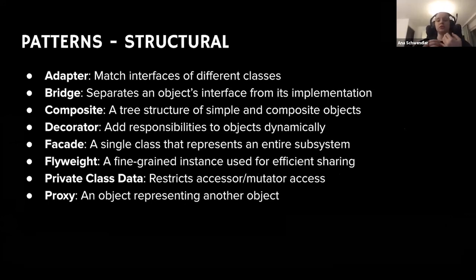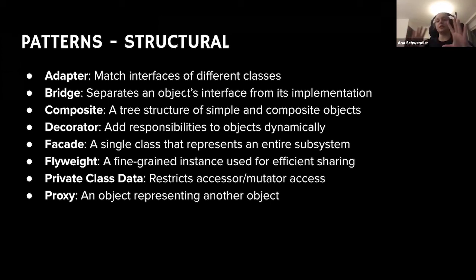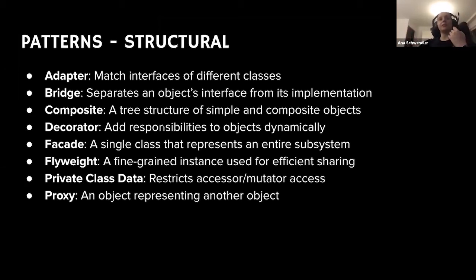The second classification is structural, which has eight patterns: the adapter, which matches interfaces of different classes; the bridge, which separates an object's interface from its implementation; the composite, a tree structure of simple and composite objects; the facade, a single class that represents an entire subsystem; the flyweight, a fine-grained instance used for efficient sharing; private class data, which restricts mutator access; and the proxy, an object representing another object.